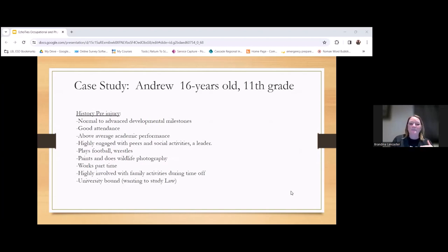These are the positives. This is what Andrew could do before. Andrew is a 16 year old 11th grade student. Prior to the injury, normal to advanced developmental milestones, good attendance, above average academics, very highly engaged with peers, school, social activities, a leader in his community. He played football. He's a wrestler. He enjoyed painting and doing wildlife photography. He did work a part-time job, was highly involved with family activities and was university bound. This student wanted to go to law school. The reason I put up the pre-injury is the impact of these injuries was to what he could do from before.